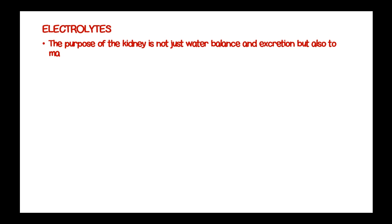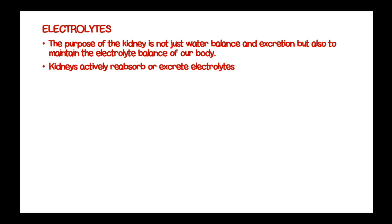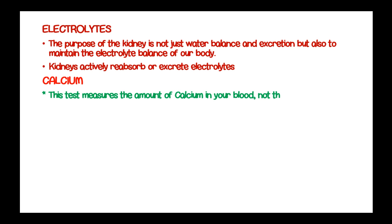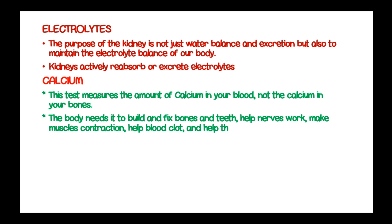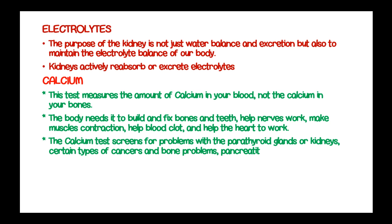The purpose of the kidney is not just water balance and excretion but also to maintain the electrolyte balance of the body. Kidneys actively reabsorb or excrete electrolytes, and whenever they are measured in blood, they can give a clue if the kidney is functioning normally. Calcium levels measure the amount of calcium in the blood. The body needs calcium to build and fix bones and teeth, help nerves work, make muscle contractions, help blood clot, and help the heart work normally. The calcium test screens for problems with parathyroid glands, kidneys, certain cancers, bone problems, pancreatitis, and kidney stones. Normal results range from 8.5 to 10.2 mg per deciliter.